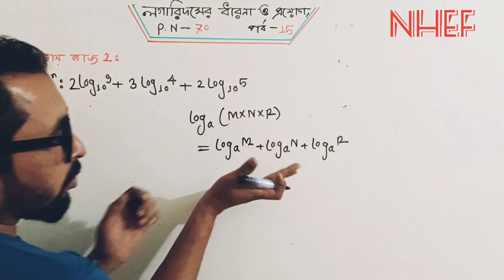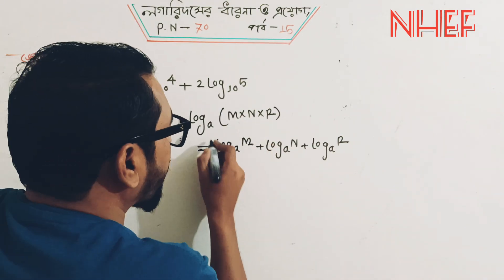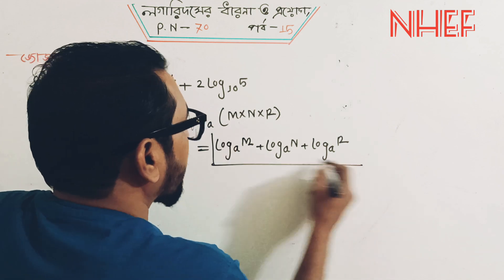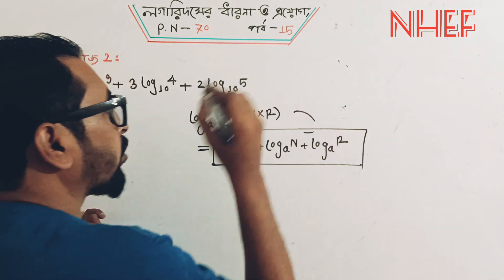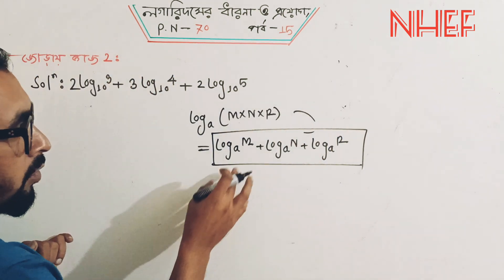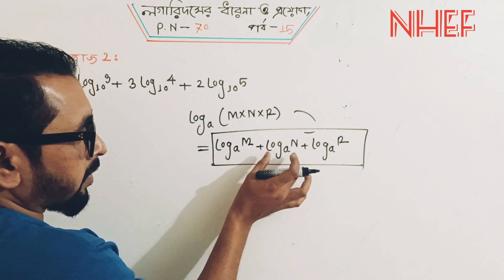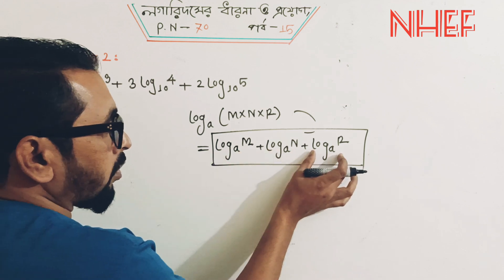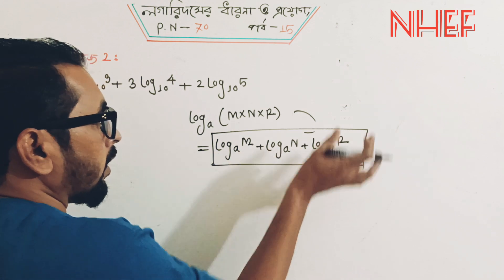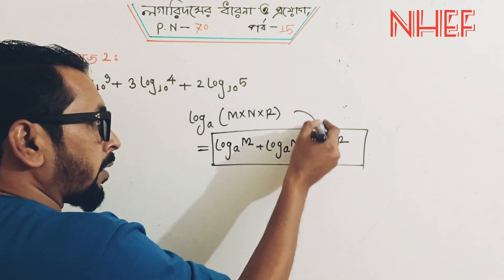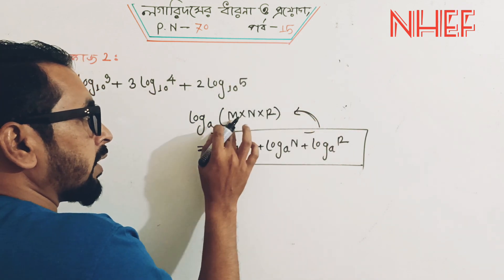We have a basic format. You will use this format. The format is: log a plus log b plus log c equals log(a · n · r). We write this as log(a · n · r).